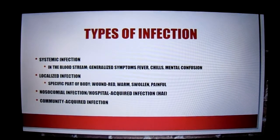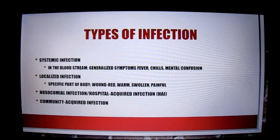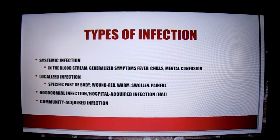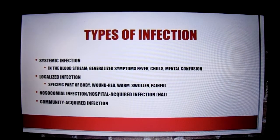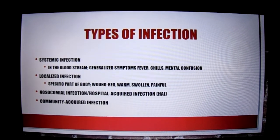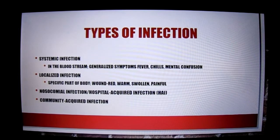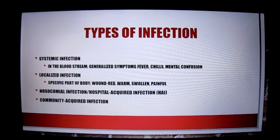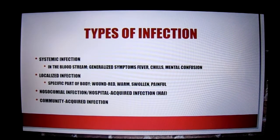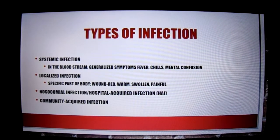There are two main types of infection: localized and systemic. Systemic is typically found in the bloodstream, and localized is usually contained to a specific part of the body, such as an arm, a leg, foot, or even your face.